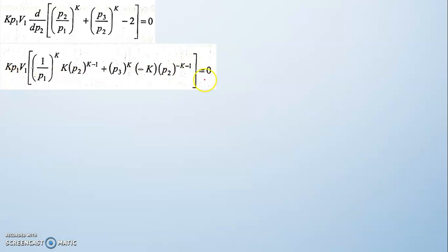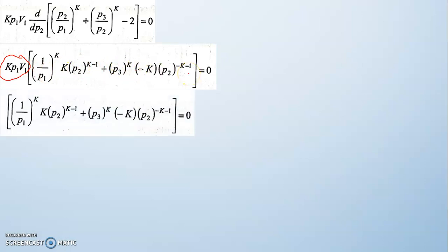Now we set the result equal to 0. The constant k·p1·v1 cannot be 0, so the remaining expression must equal 0. We write: (1/p1^k)·k·p2^(k−1) + p3^k·(−k)·p2^(−k−1) = 0.